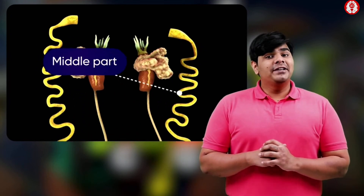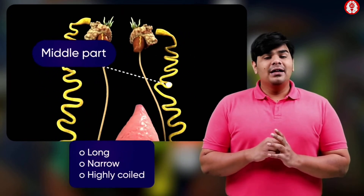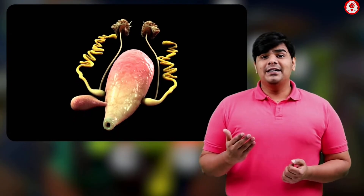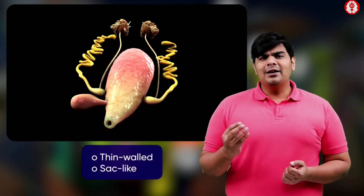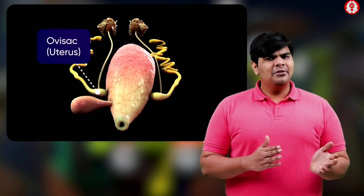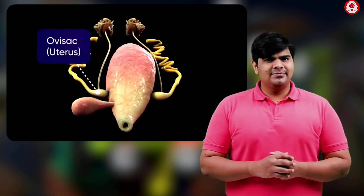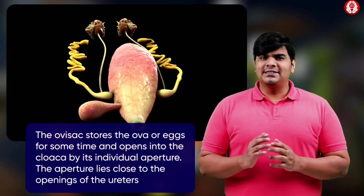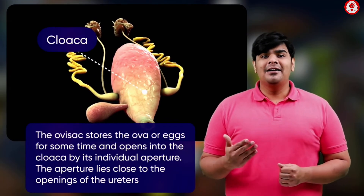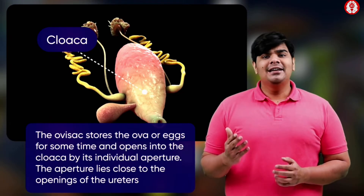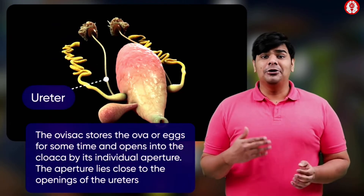The middle part of the oviduct is long, narrow and highly coiled. The posterior portion of the oviduct is thin-walled and sac-like, called the ovisac or uterus. The ovisac stores the ova or eggs for some time and opens into the cloaca by its individual aperture that lies in proximity to the openings of the ureter.